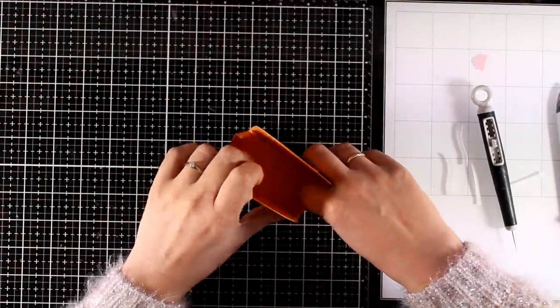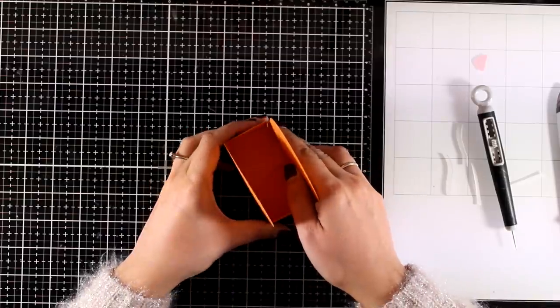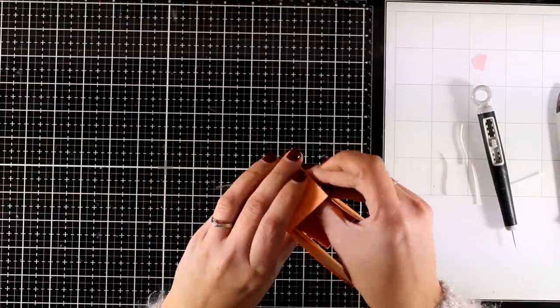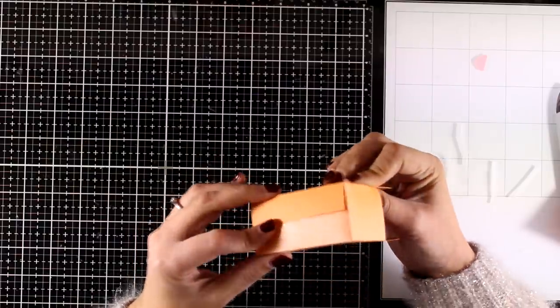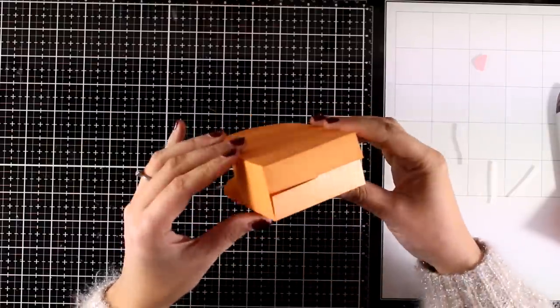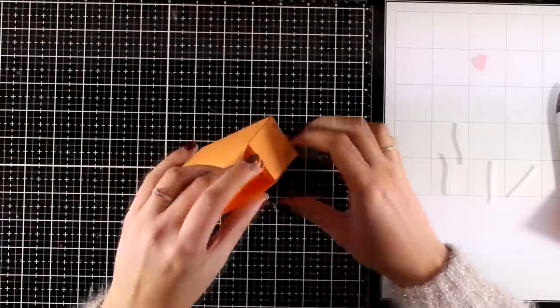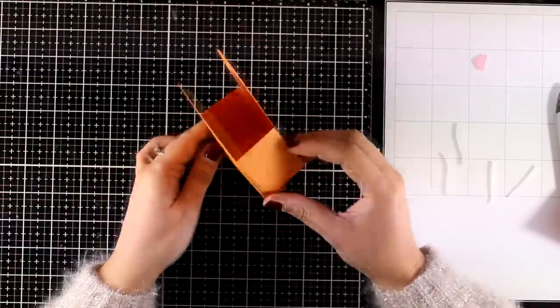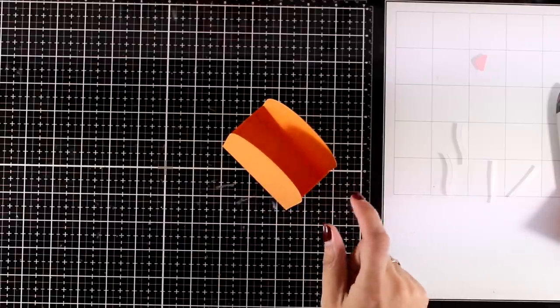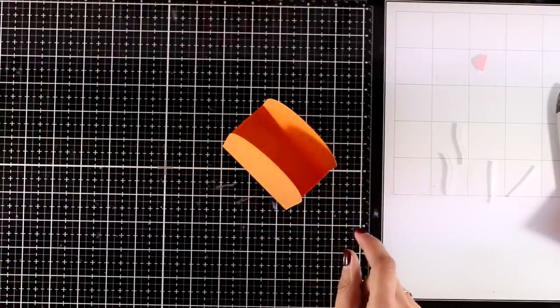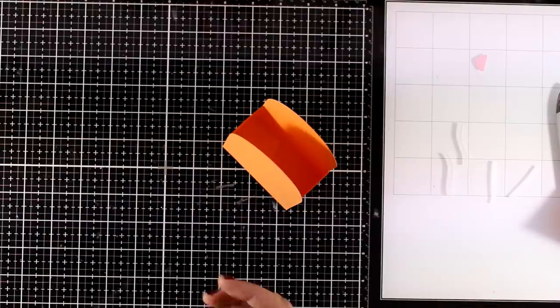If you noticed, I added tape adhesive only at the flaps, so at the base I have no tape or glue at all. If you want you can add some tape at the bottom, depending on how heavy the treats are you want to add inside. For my case I think it's fine. It depends on how sturdy you want your box to be.